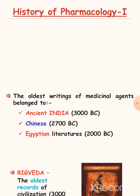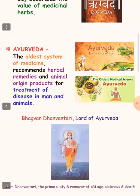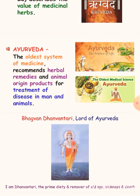Directly coming to the topic, the oldest writings of medicinal agents belong to ancient Indian, Chinese, and Egyptian literatures. In ancient India, the Rig Veda is the oldest record, which describes the value of medicinal herbs. Next, Ayurveda, the oldest system of medicine, contains herbal remedies and animal-origin products for the treatment of disease in man and animal.